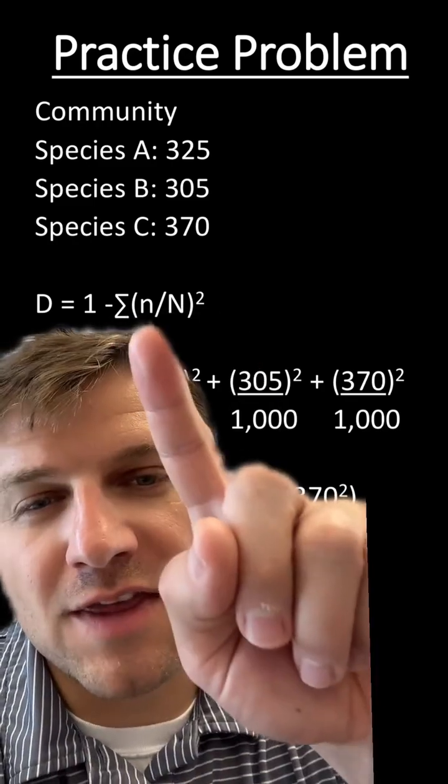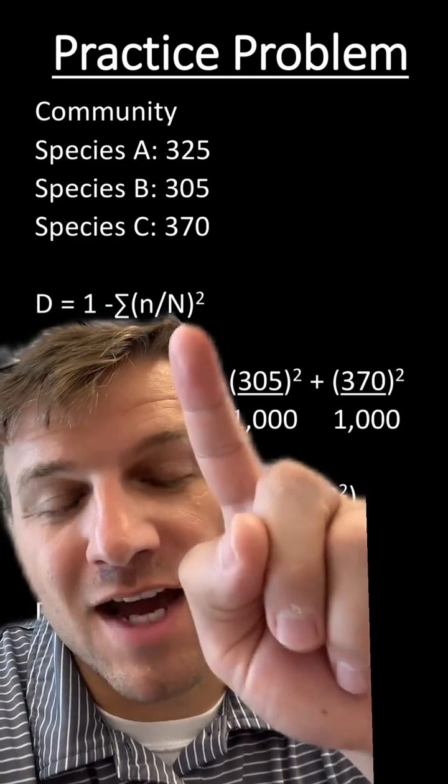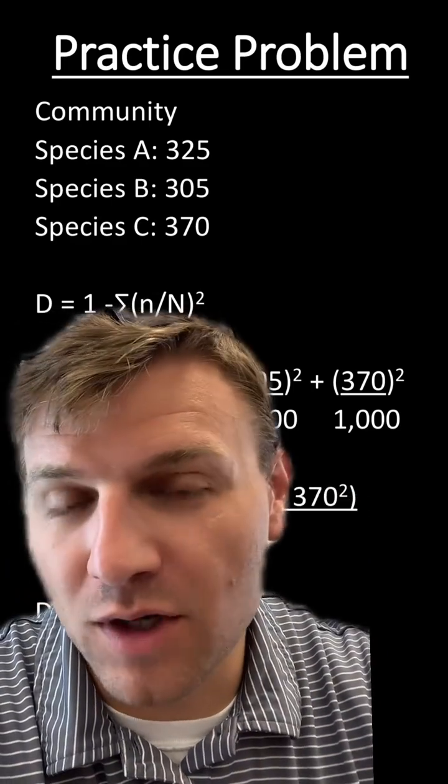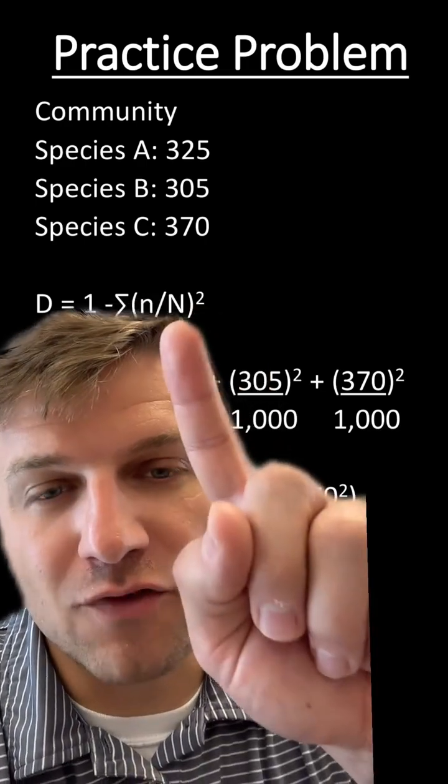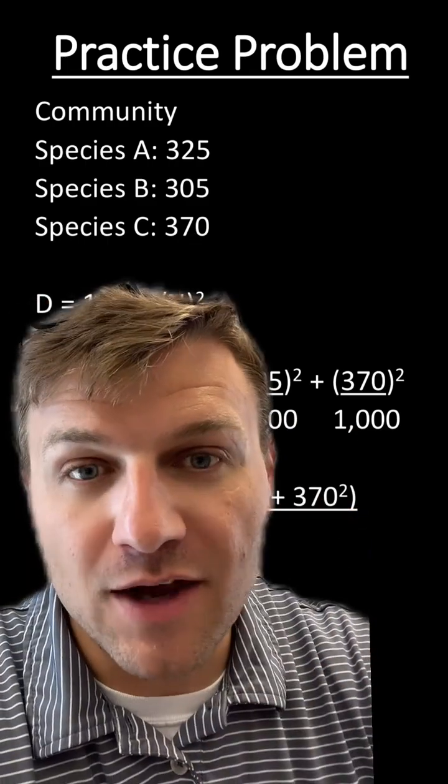So again, we're going to use our equation. Remember that the lowercase n is going to represent the number of organisms in a species, while the uppercase N is going to represent all of the organisms for all the species. So if we add up all of these organisms for all the species, we find out that the big N is 1,000.